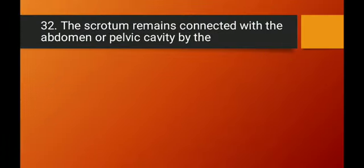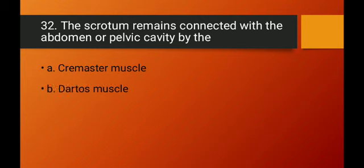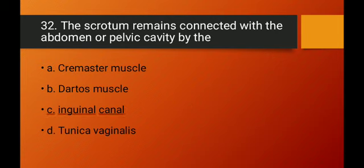Question number thirty-two: the scrotum remains connected with the abdomen or pelvic cavity by which structure? The cremaster muscle controls contraction; the dartos muscle produces wrinkles; tunica vaginalis is a dense covering of the testes. The inguinal canal is the passage through which the scrotum remains connected with the abdominal/pelvic cavity. Option C — inguinal canal — is the right answer.